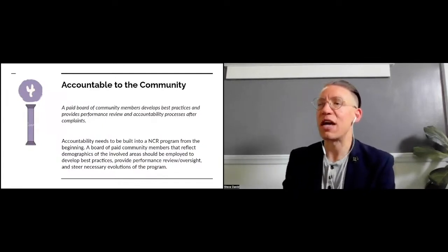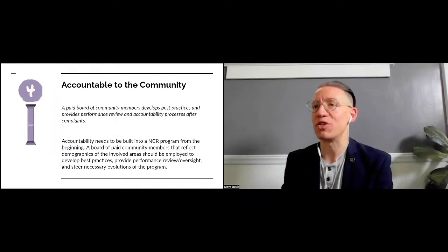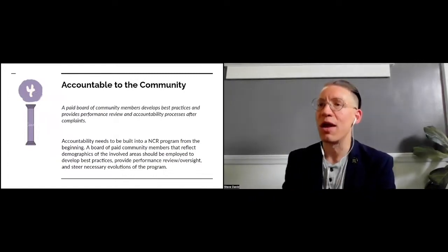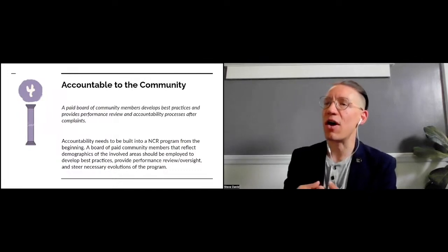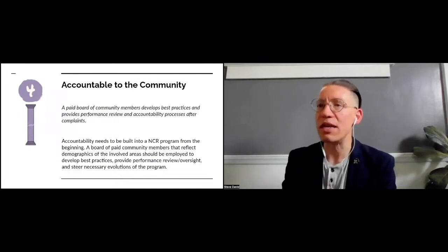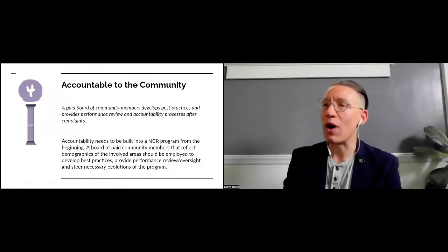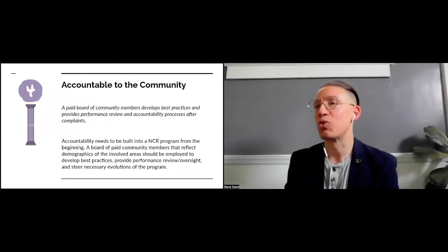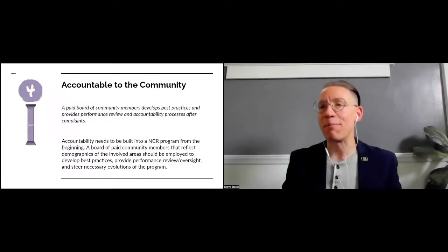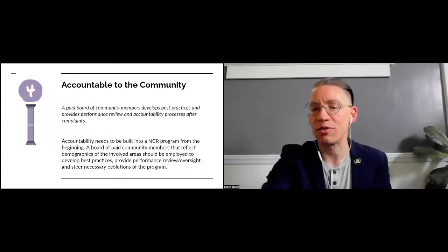We think that this is an opportunity to deal with the accountability crisis that we currently see in law enforcement. We know that doctrines like qualified immunity and the way that our collective bargaining agreements are structured insulate police from accountability in events of wrongdoing. So we want the city to stand up a paid advisory board of neighbors that has direct powers of oversight for this body and can provide that ongoing accountability directly to community members.